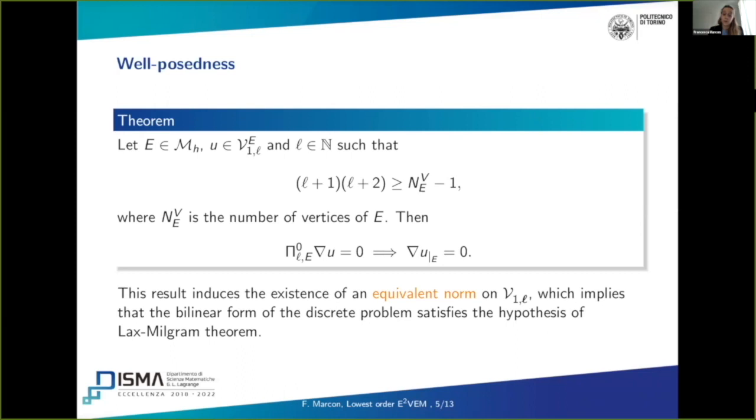Then we prove the well-posedness of this formulation. This theorem is the main result of our work. This theorem states that locally, on each polygon, let L be a natural number that has to satisfy the sufficient condition that L plus one times L plus two has to be greater or equal than the number of vertices of the polygon minus one. Then the operator pi0L is injected on the space of gradients of functions. This result induces the existence of an equivalent norm on the global virtual space with respect to the standard H1 norm, and this implies directly that the bilinear form of the discrete problem is continuous and coercive. So it satisfies the hypothesis of Lax-Milgram theorem, and it is well-posed.